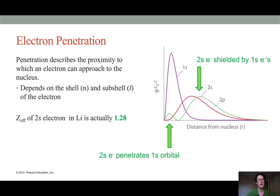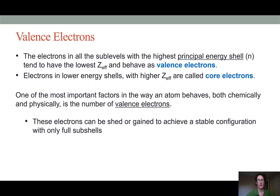This brings us to the concept of valence electrons. Valence electrons are those electrons in the highest principle shell, which tend to have the lowest Z effective. So they have the lowest effective nuclear charge and are held the least tightly into the center of the atom. The electrons that are in the lower energy shells and have the higher effective nuclear charge are referred to as the core electrons.